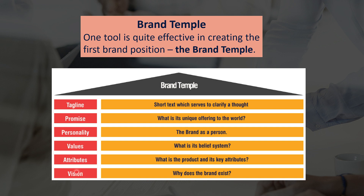After deciding the vision, the next thing is the attributes — what is the product and its key attributes. In the case of LensKart, their product is lenses of different kinds, and the key attributes include different powers, different styles, and different sub-brands like John Jacobs. Then there are the values — what is the belief system, why do you trust that brand? Basically, they provide the best services.